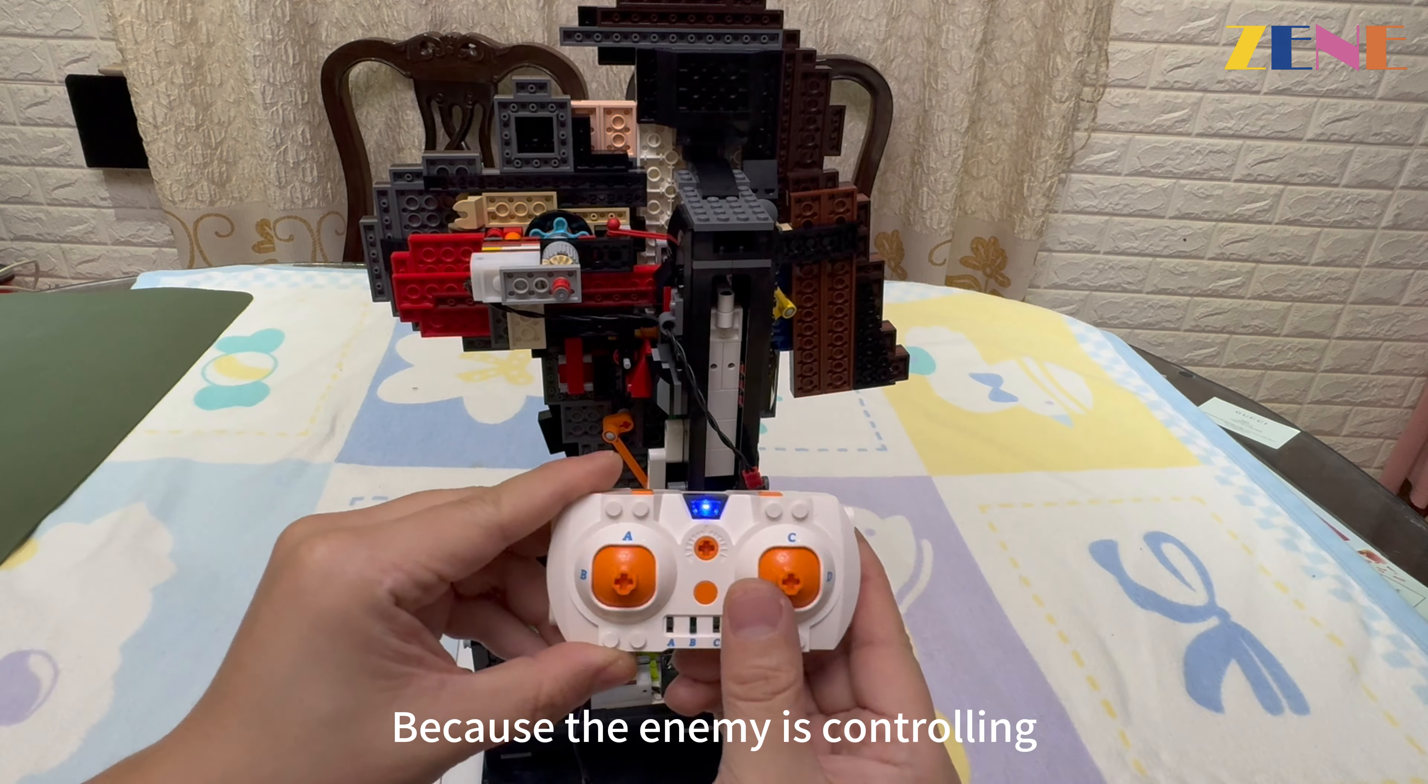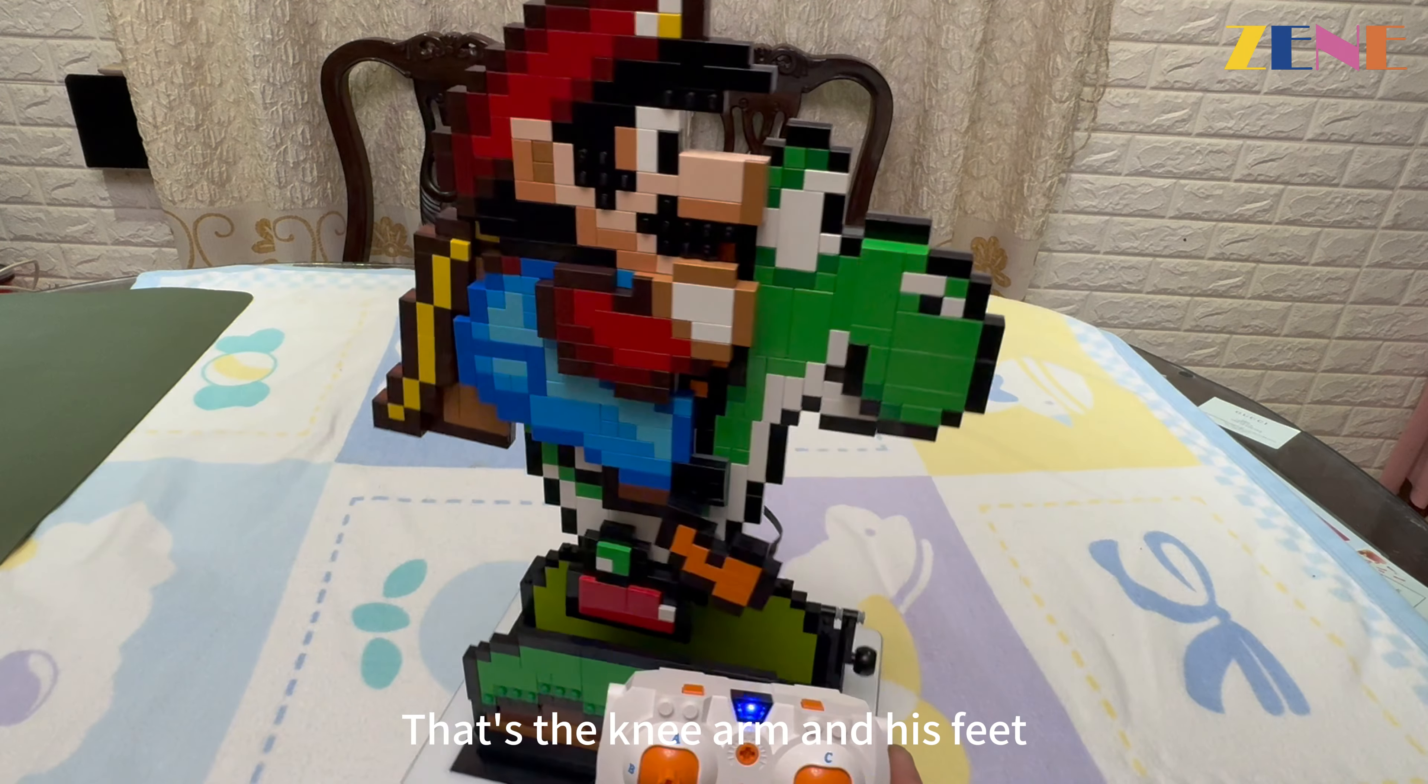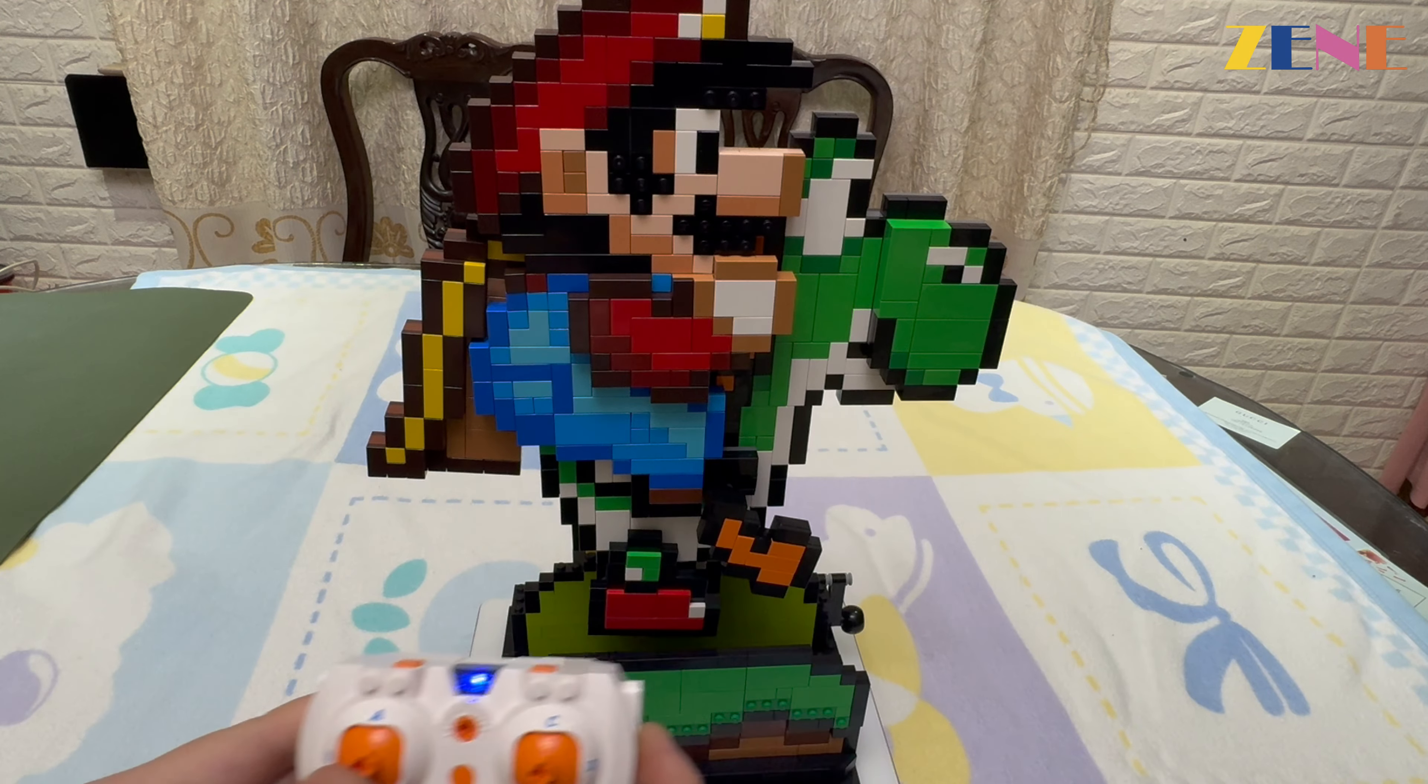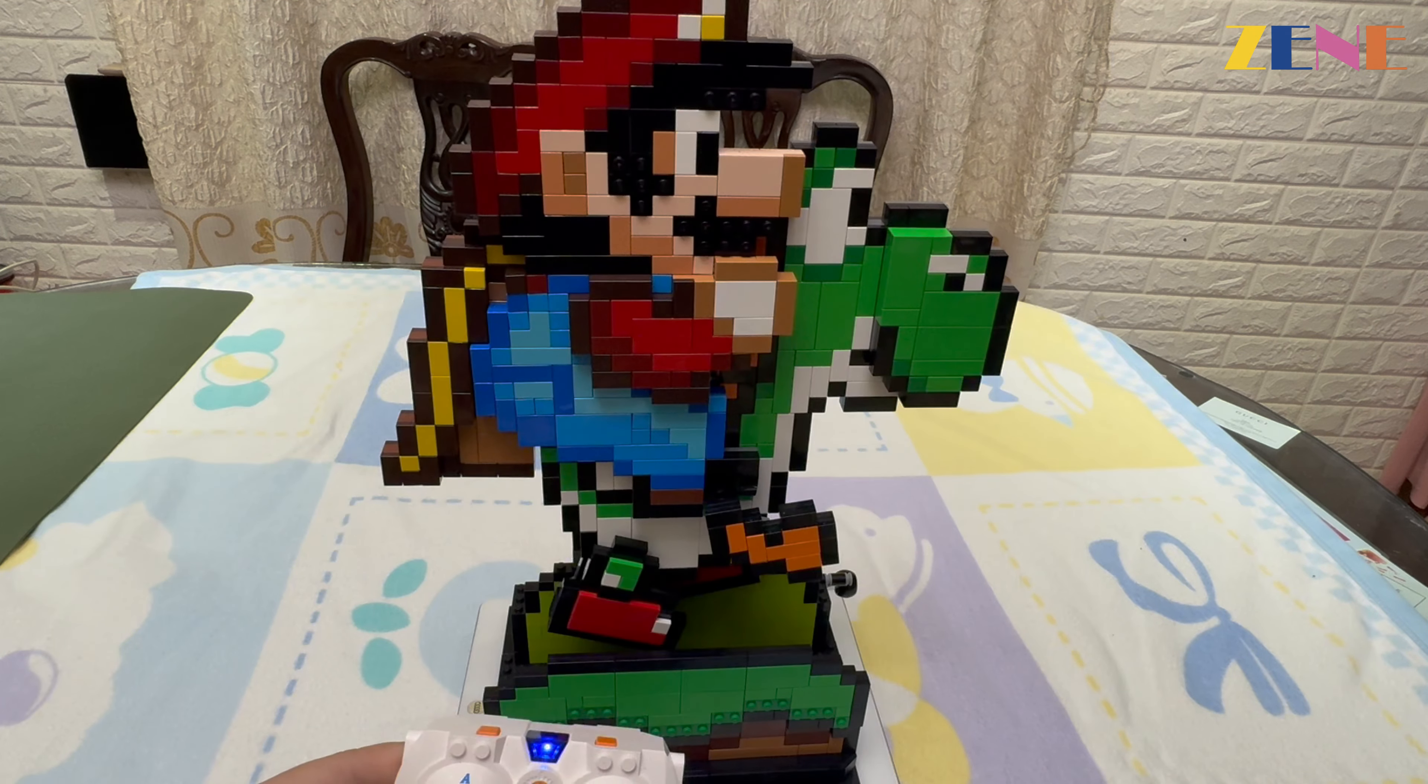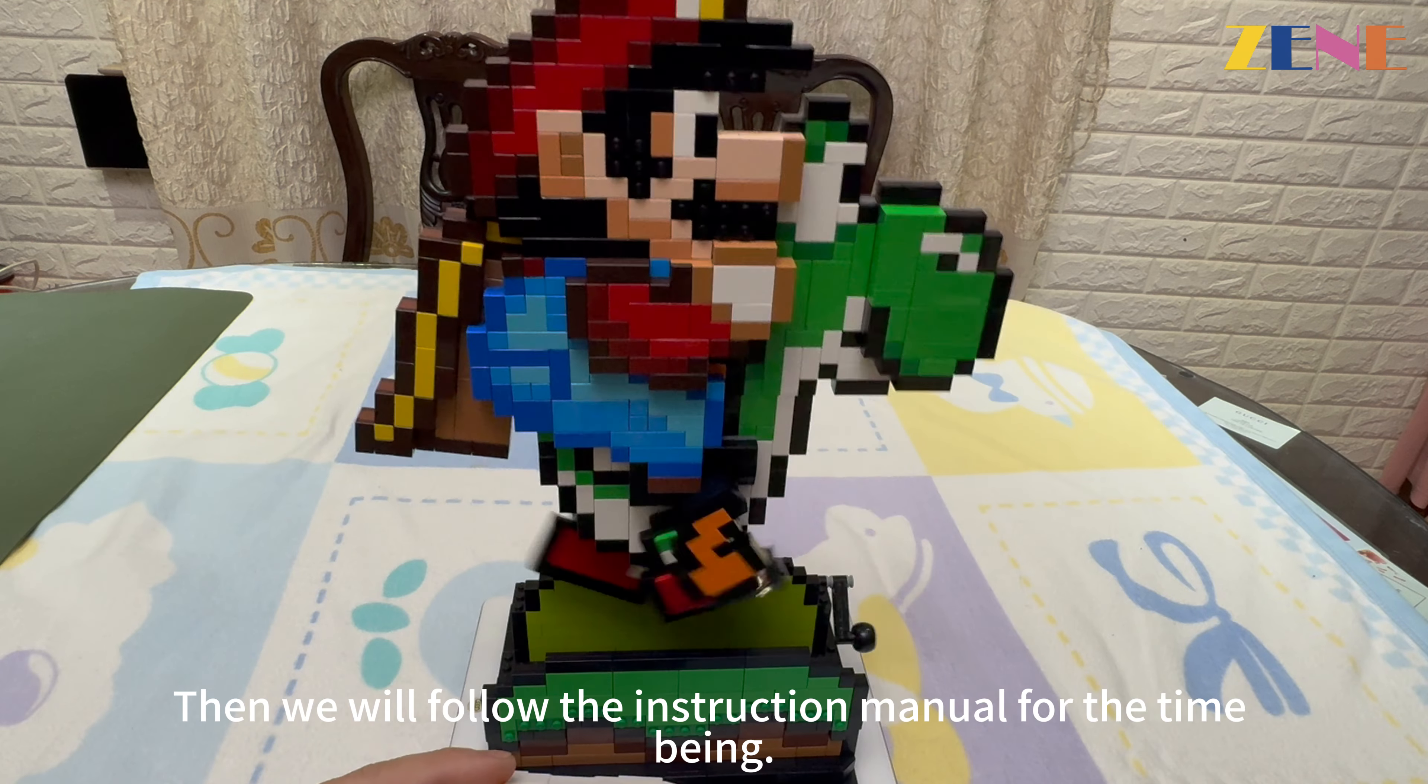The one that controls the joystick, I'm hooked up to A side. We can take a look manually first. This direction now is according to the directions of the LEGO manual, could make him clockwise. Then we will follow the instruction manual for the time being, counterclockwise.